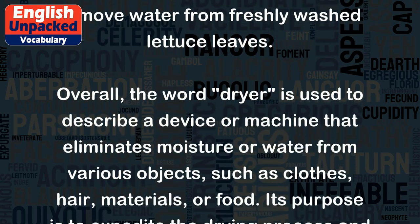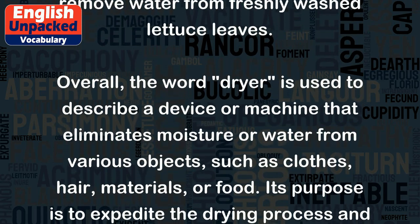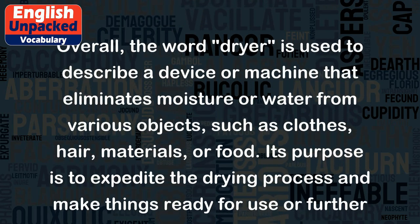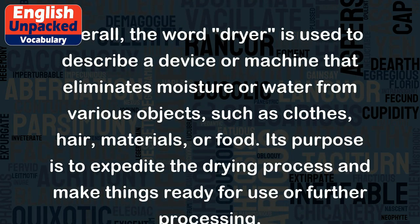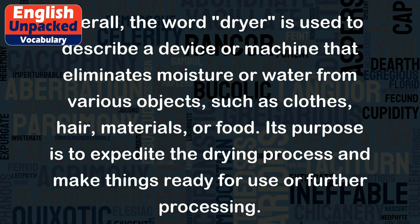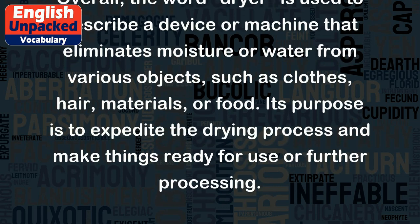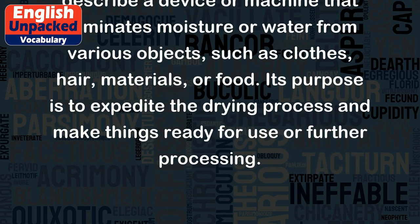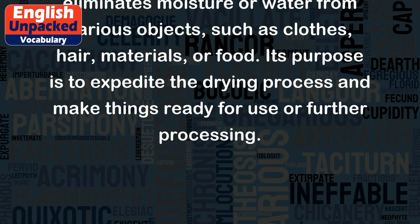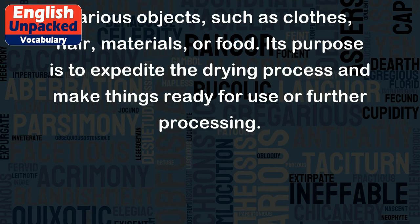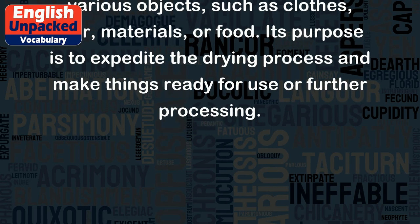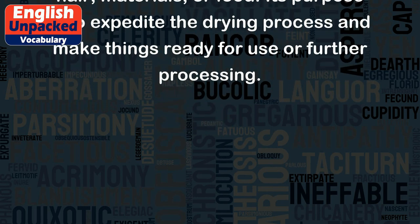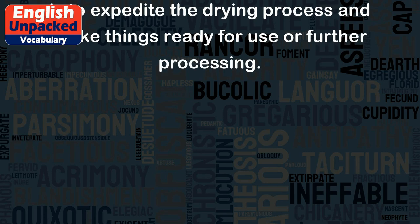Overall, the word 'dryer' is used to describe a device or machine that eliminates moisture or water from various objects, such as clothes, hair, materials, or food. Its purpose is to expedite the drying process and make things ready for use or further processing.